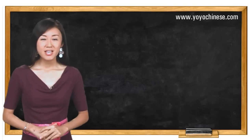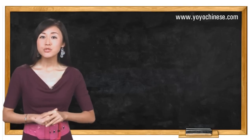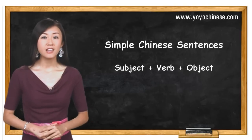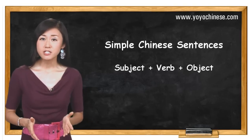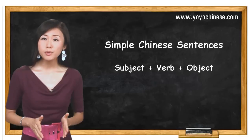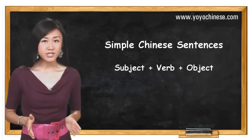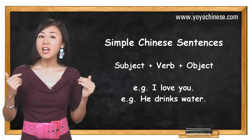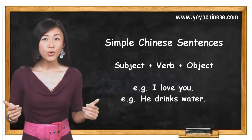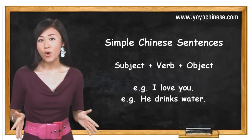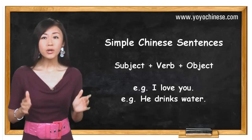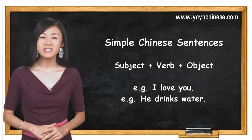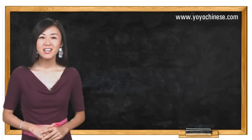First, remember this: when it comes to simple Chinese sentences — like subject plus verb plus object sentences such as 'I love you' or 'he drinks water' — the word order for these sentences is actually the same as in English.